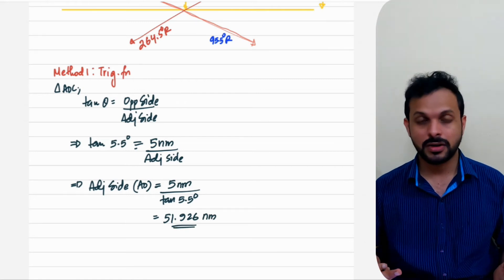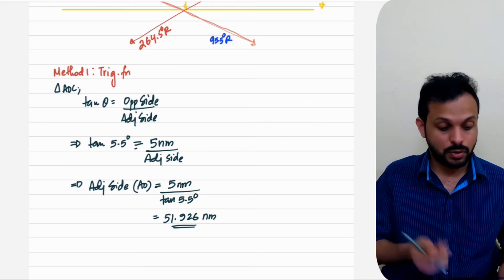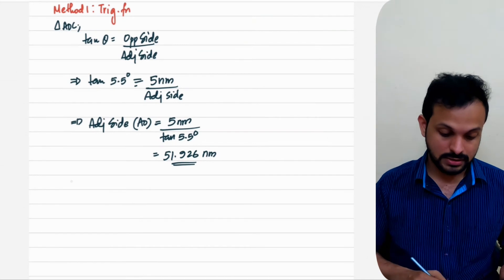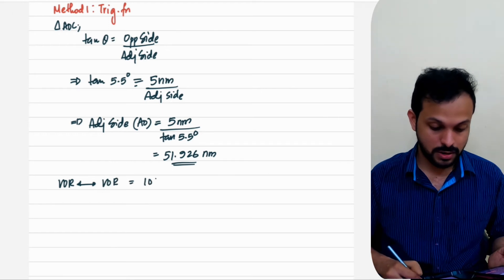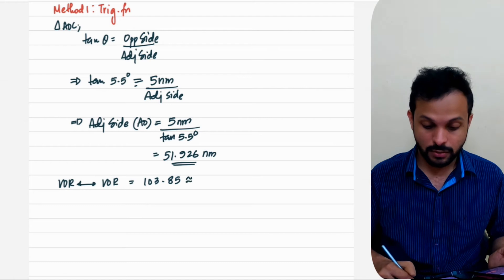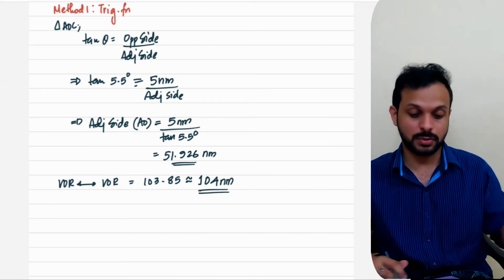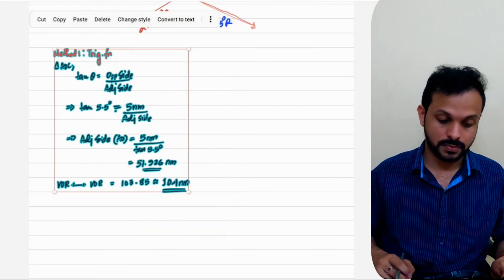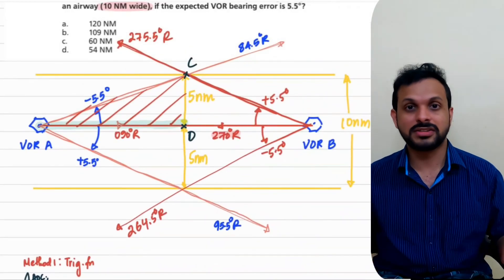Always use the answer function to avoid rounding off early. Keep the answer in the calculator and multiply by 2. That gives you the VOR-to-VOR distance of 103.85 nautical miles. Rounding off, the final answer is 104 nautical miles — this is the maximum distance between the VORs for the aircraft to stay within the 10 nautical mile boundary. So the distance between VOR A and VOR B is 104 nautical miles.